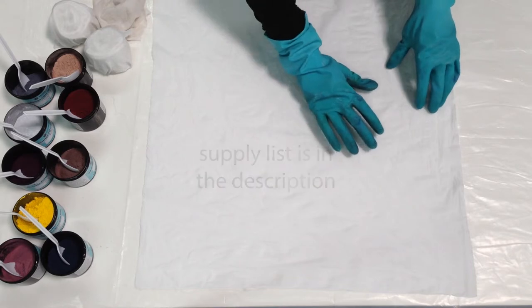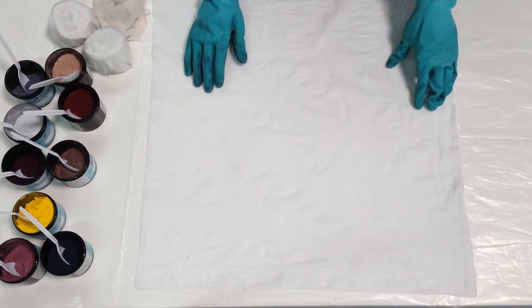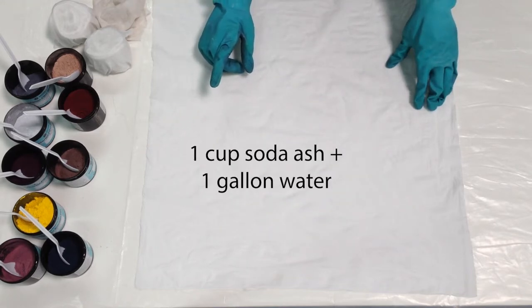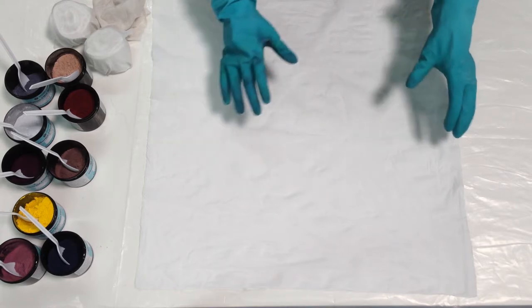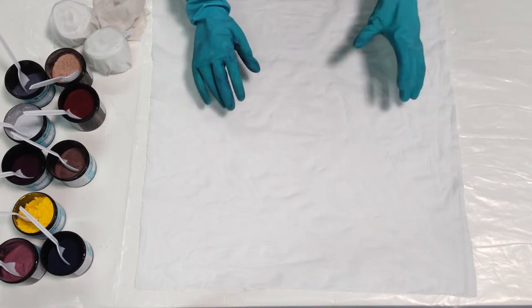I'm starting with a piece of 100% cotton muslin that's been soaking in a soda ash solution for at least 10 minutes. It's pretty squarish, but not exactly schmackly.